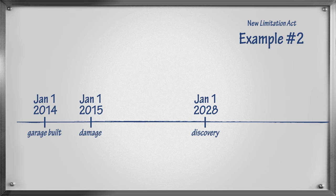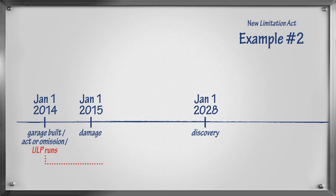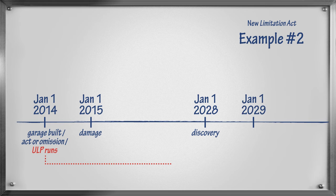When does time begin to run in the limitation periods? The act or omission occurred on January 1, 2014, when the garage was built. This is the date from which the Ultimate Limitation Period begins. It will expire 15 years later on January 1, 2029.